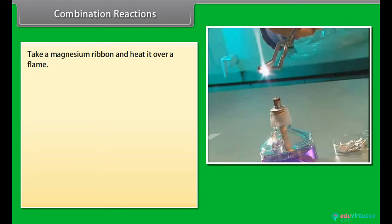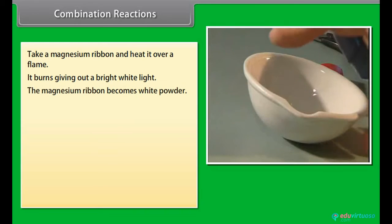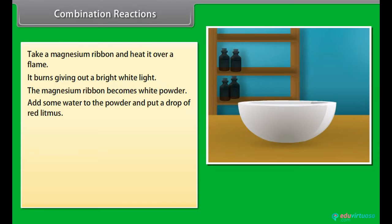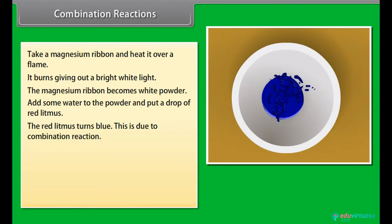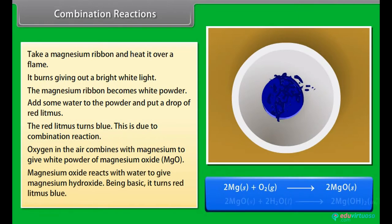Take a magnesium ribbon and heat it over a flame. It burns giving out a bright white light. The magnesium ribbon becomes white powder. Now add some water to the powder and put a drop of red litmus. The red litmus turns blue. This is due to combination reaction. Oxygen in the air combines with magnesium to give white powder of magnesium oxide. Magnesium oxide reacts with water to give magnesium hydroxide. Being basic, it turns red litmus blue.